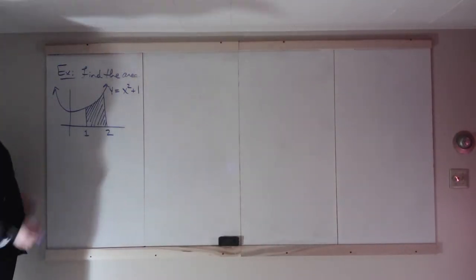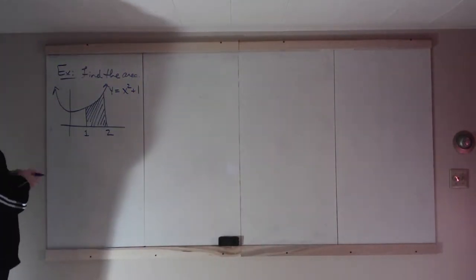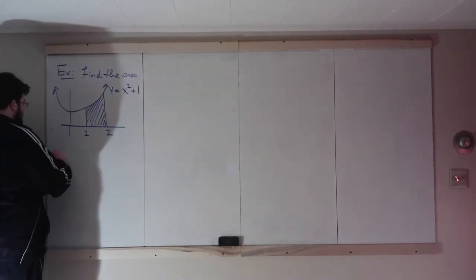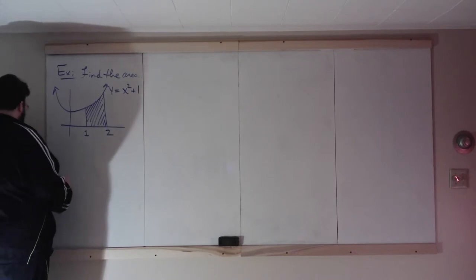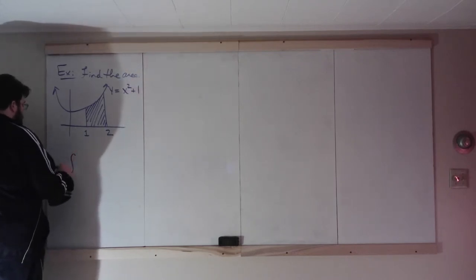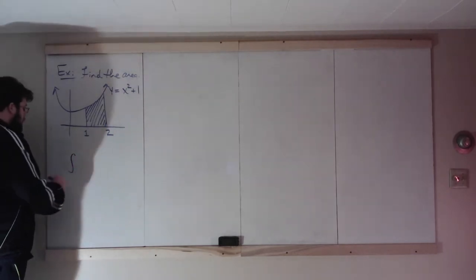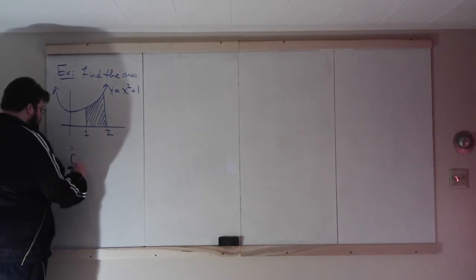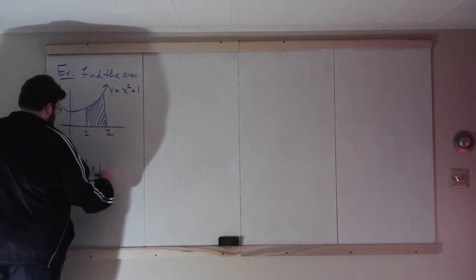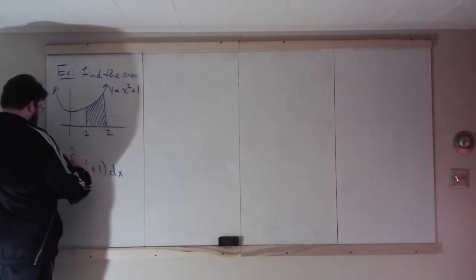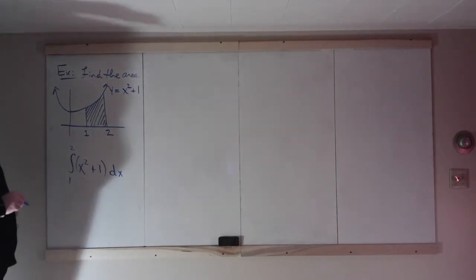Let's start with this example. Find this area now, the area under y equals x squared plus 1 between 1 and 2. This area, I'll call it the integral from 1 to 2 of our function, would give us the area between 1 and 2.